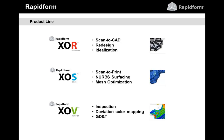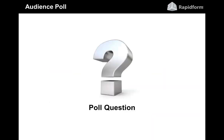RapidForm XOS is a subset of XOR. Its main focus is scan-to-print: scanning things, cleaning up the data to get a good watertight mesh that is printable. You can also do NURBS surfacing on a scanned part — the advantage of NURBS surfaces over a mesh is that they're lighter and can be used downstream in many applications where large meshes would crash software. Then there's RapidForm XOV, our inspection software, which is all about deviation analysis, color maps showing where a scanned part is in and out of tolerance compared to a CAD model, and extensive tools for geometric dimensioning and tolerancing (GD&T).